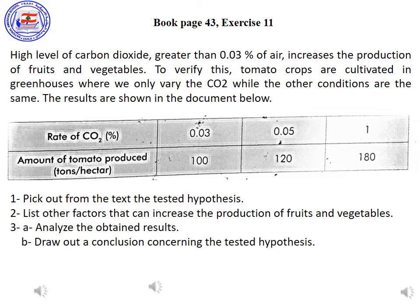Number 1: Pick out from the text the tested hypothesis. Always, when you want to write the hypothesis, write 'Hypothesis:' followed by 'maybe.' Maybe high levels of carbon dioxide greater than 0.03% of air increase the production of fruits and vegetables. This is taken directly from the text.